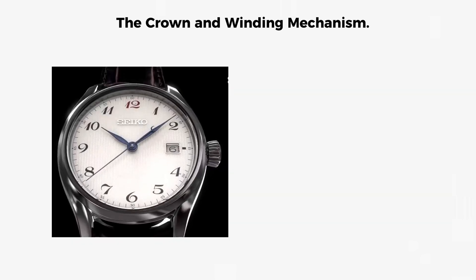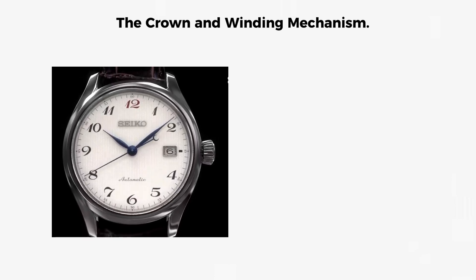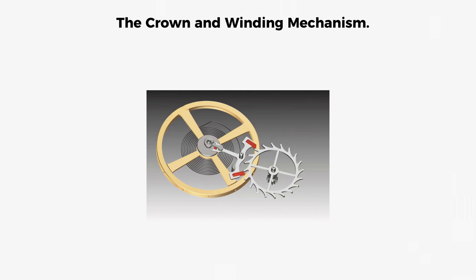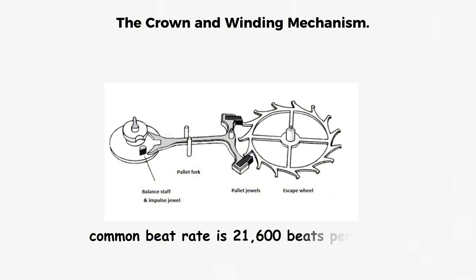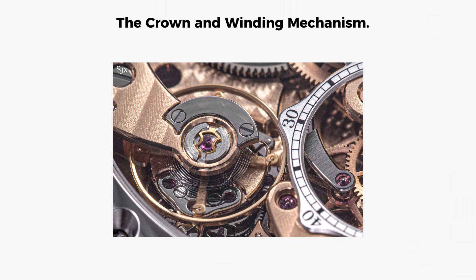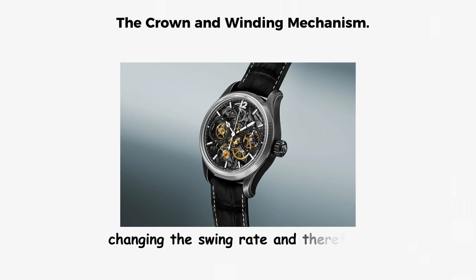The characteristic ticking sound you hear from a mechanical watch is made by the pallet jewels as they catch and release the escape wheel teeth. Each incremental rotation of the escape wheel is called a beat. A common beat rate is 21,600 beats per hour, which equals six beats per second. The balance wheel can be regulated by adjusting two pins that alter the active length of the hairspring, changing the swing rate and therefore the speed of the entire watch.